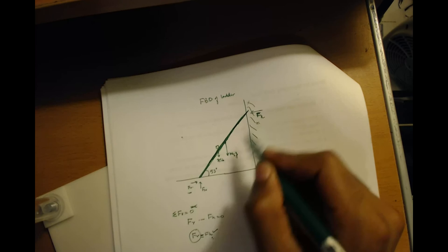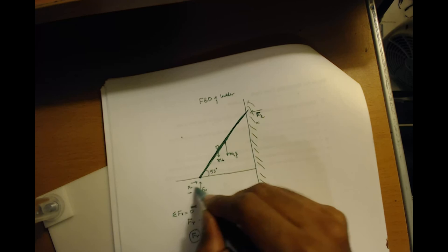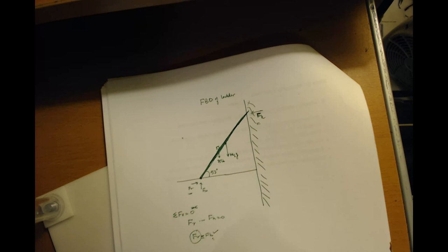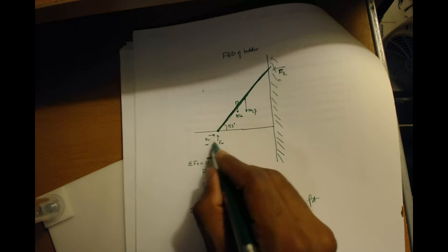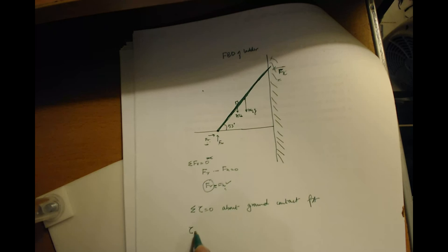It would be convenient for me to find this if I found the torque, sum of all torques about this point, which would eliminate these two unknowns, and I could find that. So if I did sum of all torques equals zero about the ground contact point. Then I get the torques due to these two guys are zero now. So I have torque due to this, torque due to this, and torque due to that. Torque due to fh plus torque due to the weight of the ladder plus torque due to the weight of the boy equals zero.